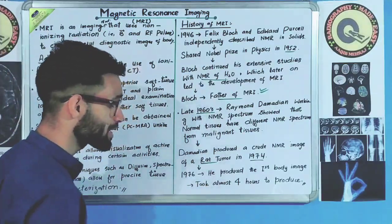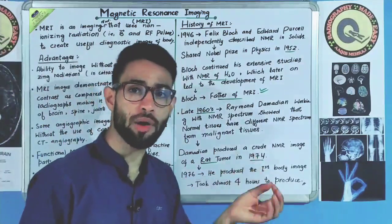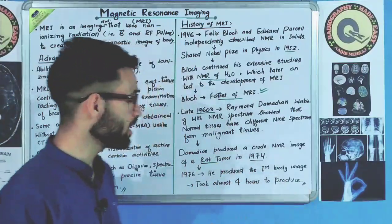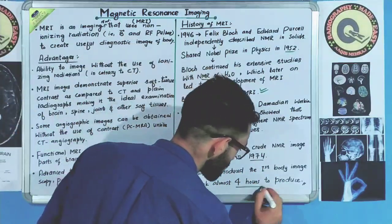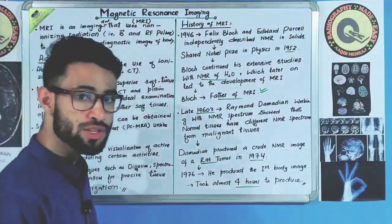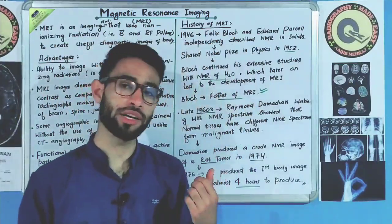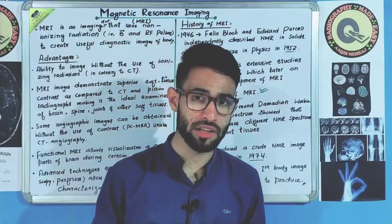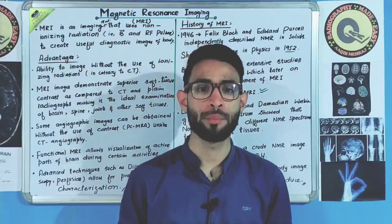In 1976, Damadian produced the first body image of the human body, and it took almost four hours to produce. He also invented the first MRI machine — that is, the first MRI scanner.